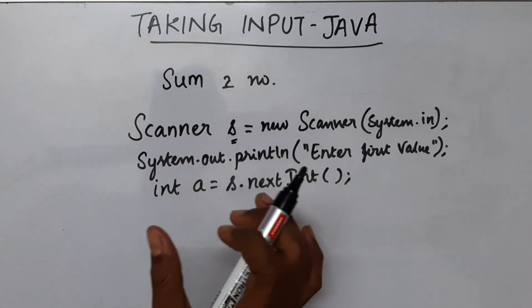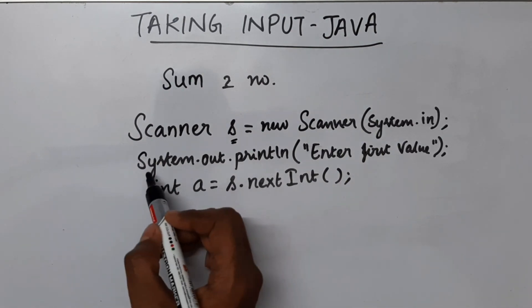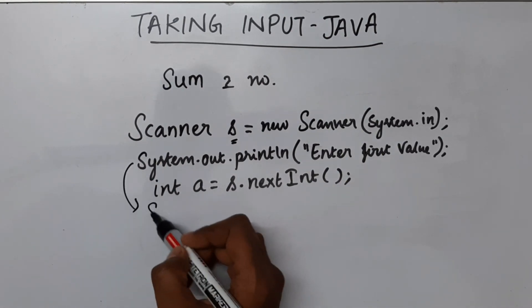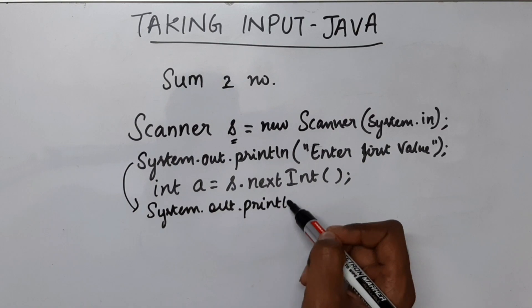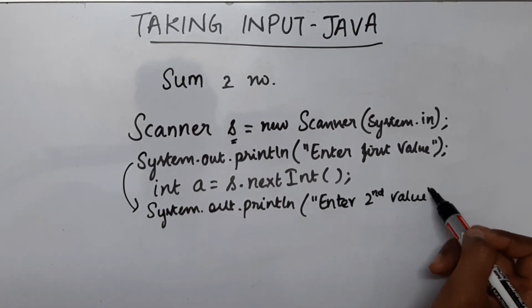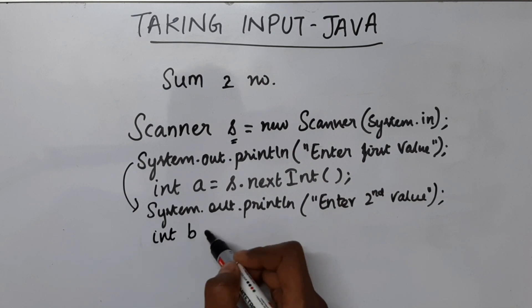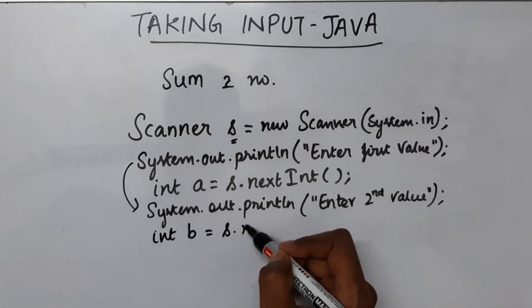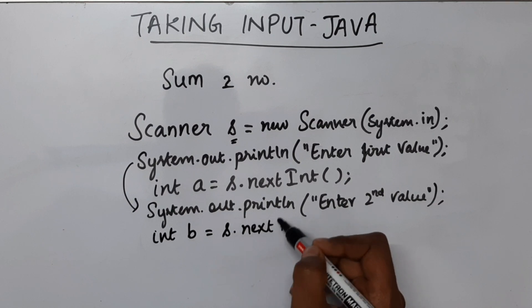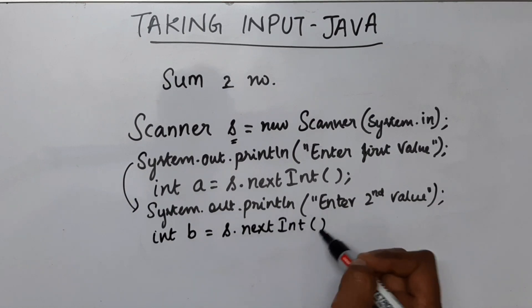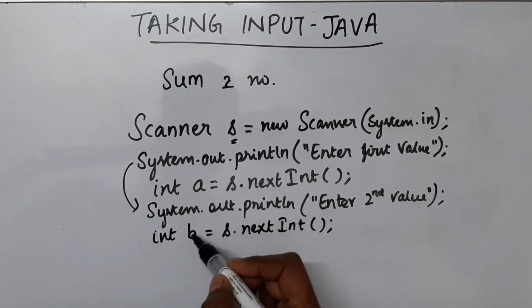So now we got the first value. Now let's do this for the second value. So I am going to repeat this line again. Now let's take the input from the user and store it in a variable called b, s.nextInt. Now this will get me the second value from the user and store it in b.